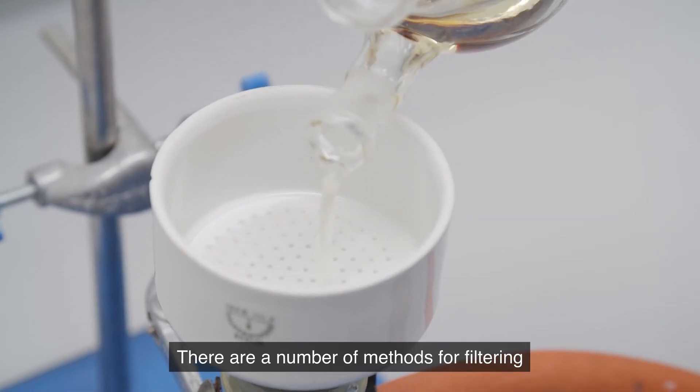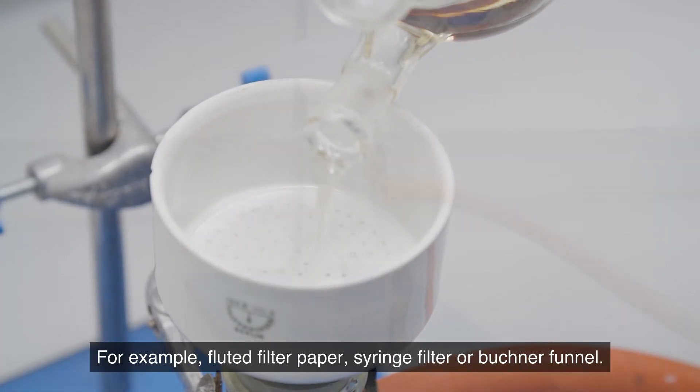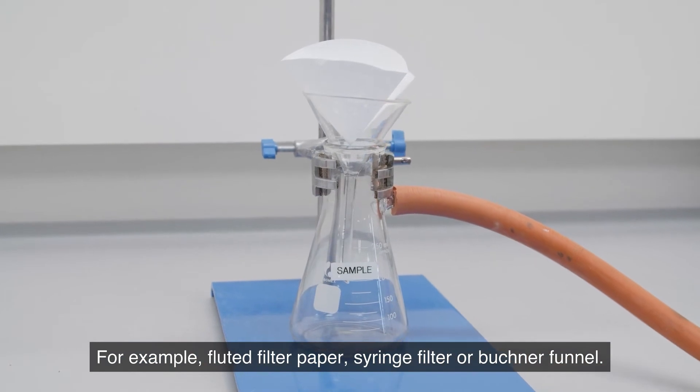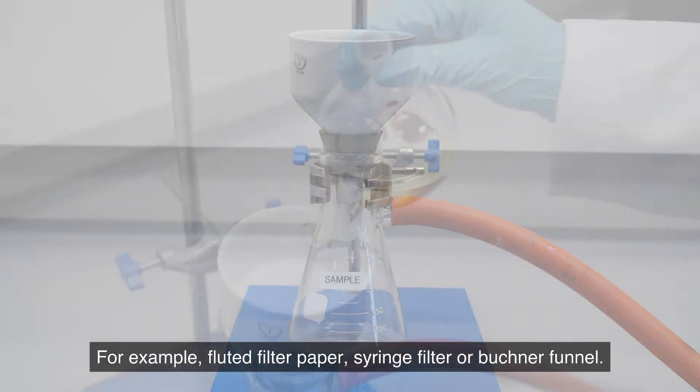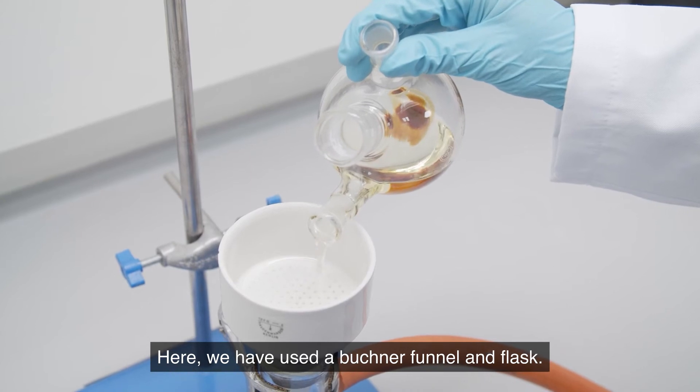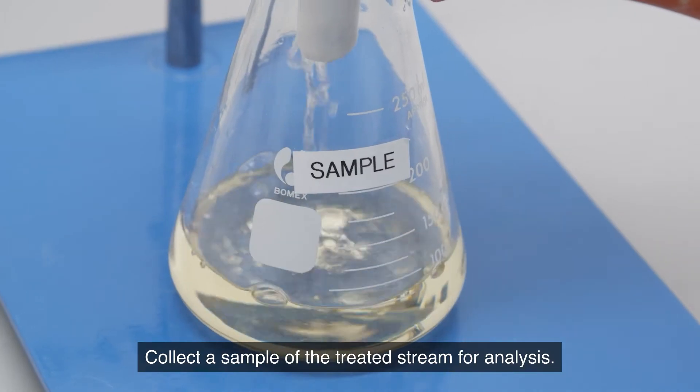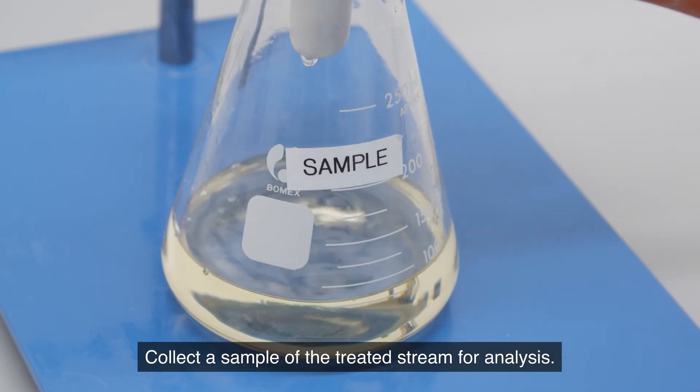There are a number of methods for filtering. For example, fluted filter paper, syringe filter or Buchner funnel. Here we have used a Buchner funnel and flask. Collect a sample of the treated stream for analysis.